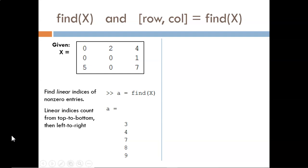In these examples, we are searching through matrix X, defined as shown. The syntax find X returns the linear indices of non-zero numbers. Linear indices means counting top to bottom, then left to right. So here, the 5 is at index 3, the 2 is at index 4, and so on.